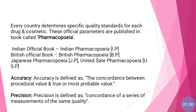The first definition is of accuracy. Accuracy is defined as the concordance between the procedural value and the true or most probable value. When you perform an assay in the lab and get a reading, that reading should be close to the true or most probable value — that is accuracy.